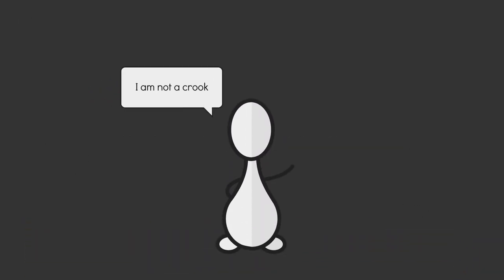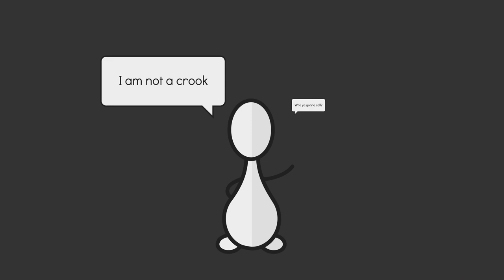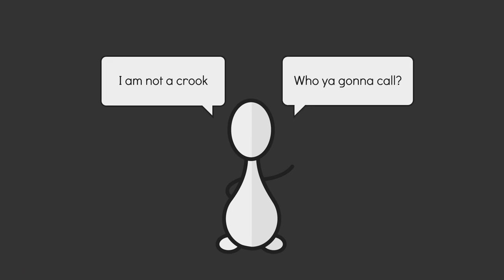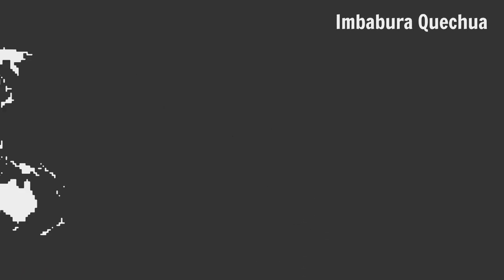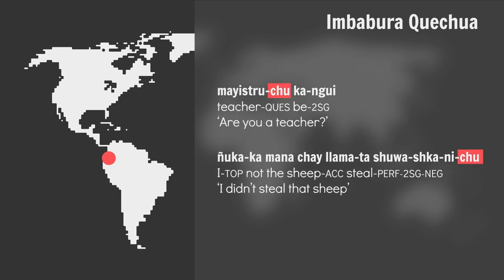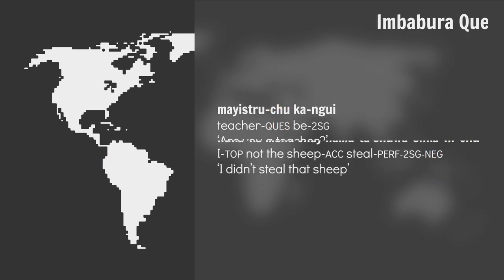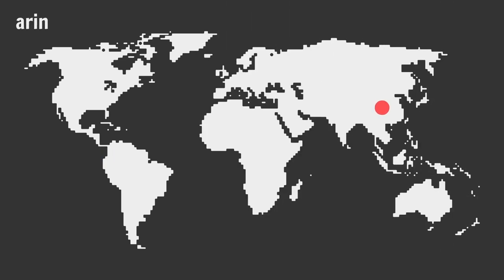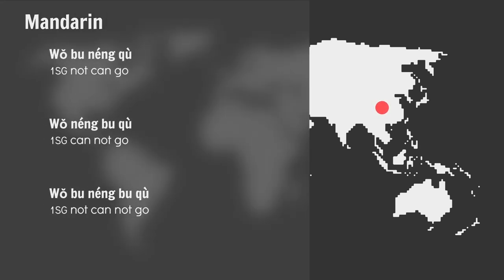In some languages, negative statements and questions (interrogative statements) carry the same modality. In Imbavura Quechua, the clitic 'chu' is used for both. Now, Mandarin has a feature that lets the speaker negate both the modal verb and/or the main verb of a statement, depending on what the speaker wants to say.